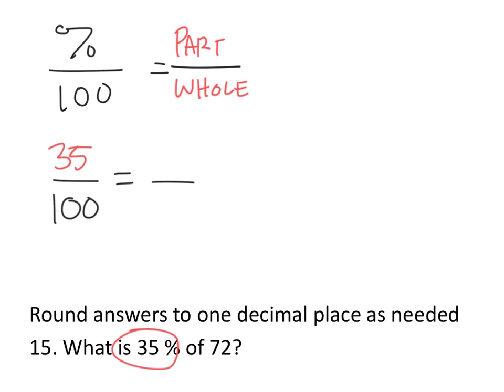So the 72, as it turns out, is a whole value, which means we're going to find the part. The percent is usually the part of some whole value.